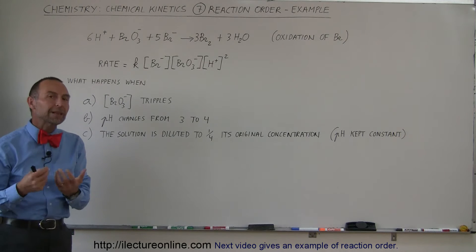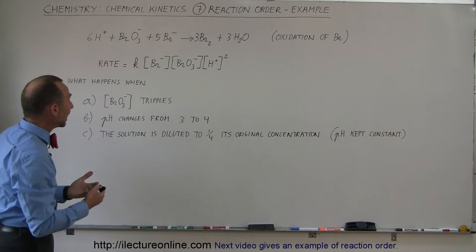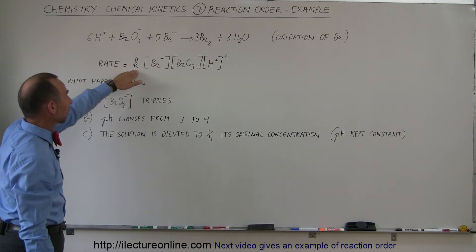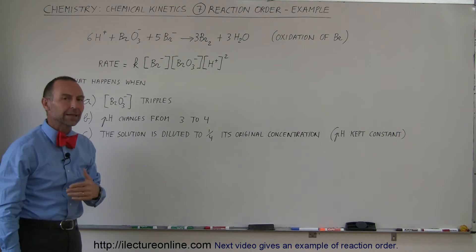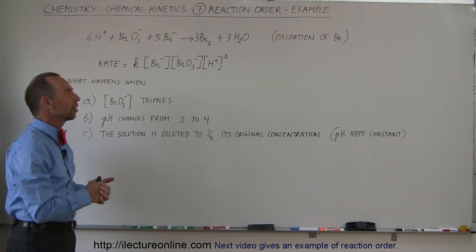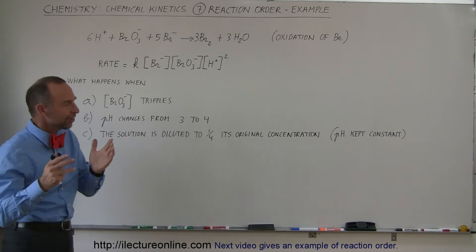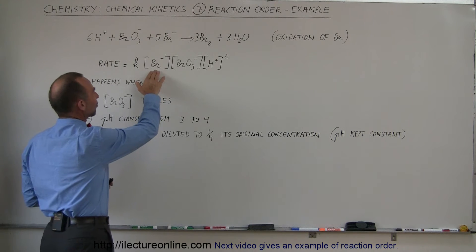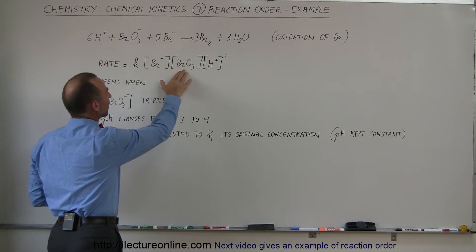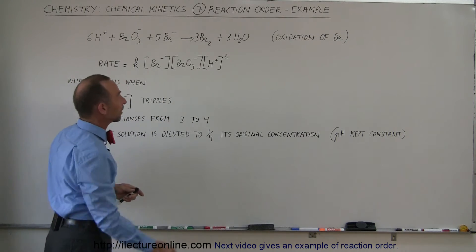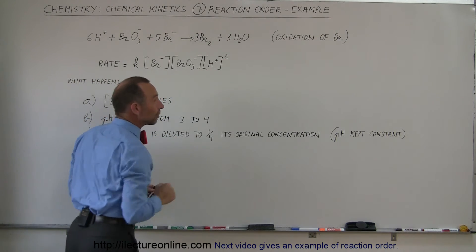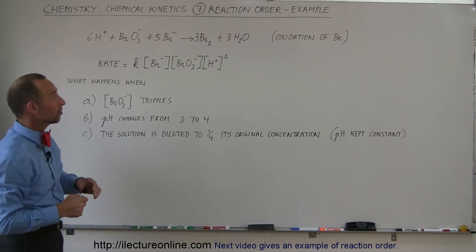So let's say that experimentally we determined the reaction rate. The rate of reaction is equal to the constant k, which is called the reactant constant or reaction constant. We have the concentration of the bromine ion, the bromate ion, and the hydrogen ion, but that's the second order there. So the total order of this reaction is the fourth order, 1 plus 1 plus 2 is 4.